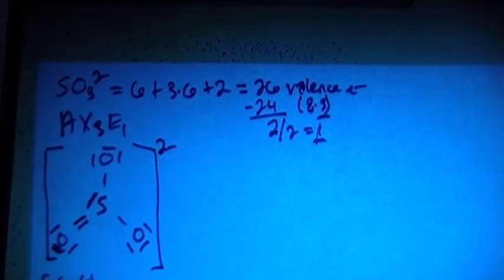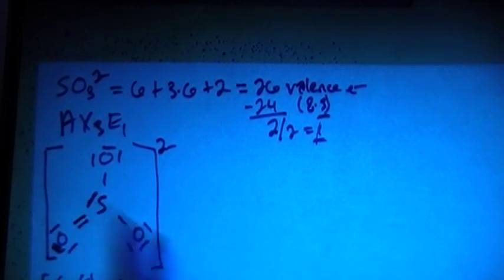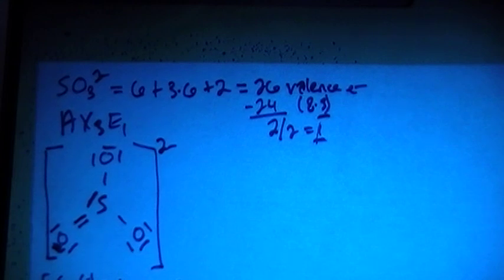So the formal charge on sulfur is going to be 6 valence brought in, minus 1, 2, 3, 4 bonds, minus 2 non-bonding electrons, gives us formal charge of 0.